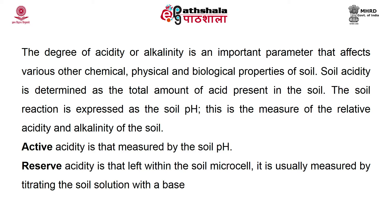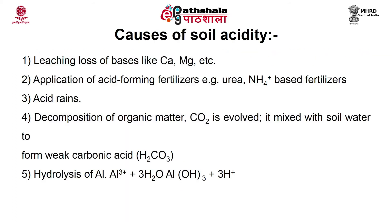Nutrients required for plants to complete their life cycles are called essential nutrients. Nutrients that increase plant growth but are not important to complete the plant life cycle are termed non-essential nutrients. With the exception of carbon, hydrogen, and oxygen — which are supplied by carbon dioxide and water — the nutrients originate from the mineral components of the soil. Uptake of nutrients by plants can only occur when they are present in a plant-available form. In a variety of situations, nutrients are absorbed in an ionic form from soil water. The bulk of most nutrient elements in the soil are retained in crystalline form within primary and secondary minerals.